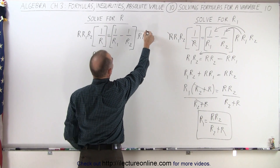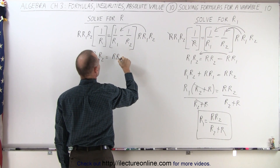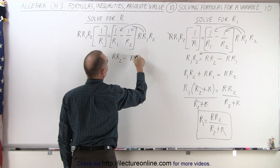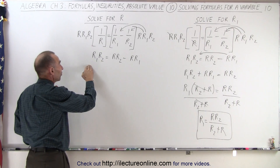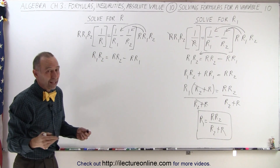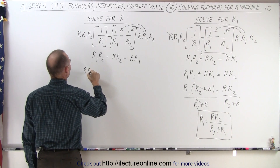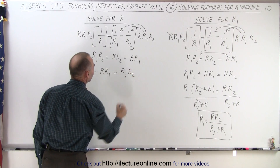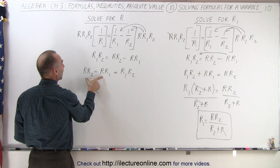On the right side, multiplying by the first term, the R1s cancel and we're left with R times R2. Minus — multiplying by the second term, the R2s cancel and we're left with R times R1. Now I look at what I'm solving for: R. Both terms containing R are on the right side, so I simply flip the equation around without changing any signs. I get R times R2 minus R times R1 on the left, equals R1 times R2 on the right.